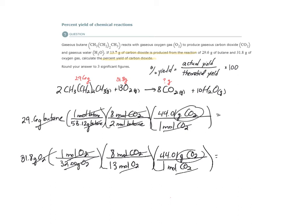Now, let's do the math for both of these, now that the units look good. 29.6, open parenthesis, one over 58.12, close. Eight over two, close. 44.01 over one. We get 89.66 grams of CO2.